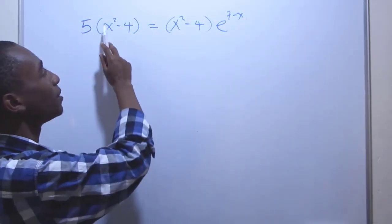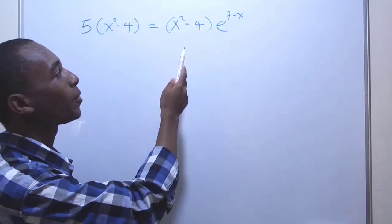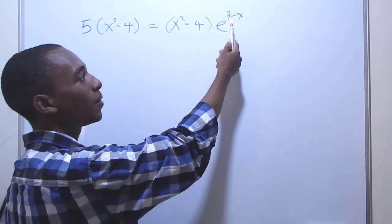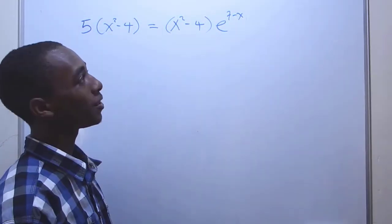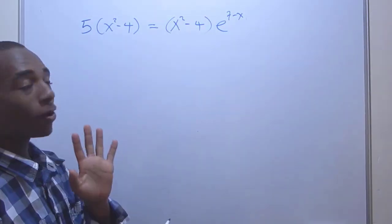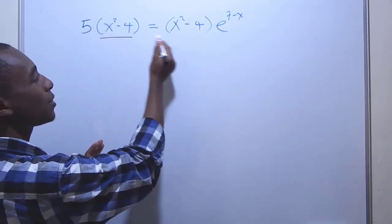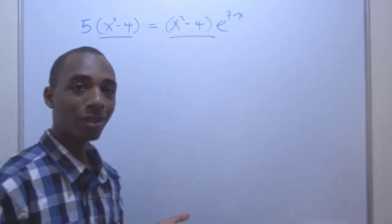What you have here is 5(x² - 4) = (x² - 4)e^(7-x). The wrong part comes here. If you just cancel this out with this, which is mathematically correct,